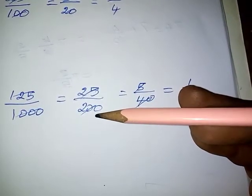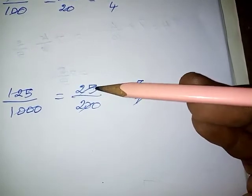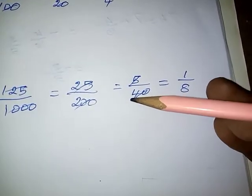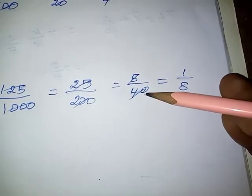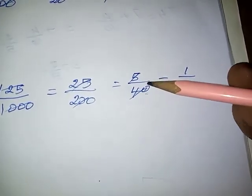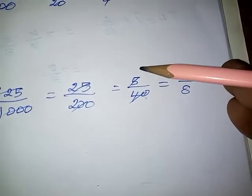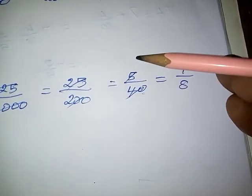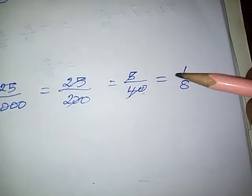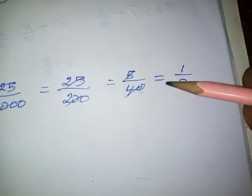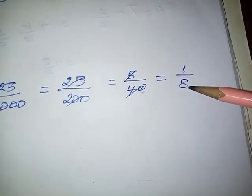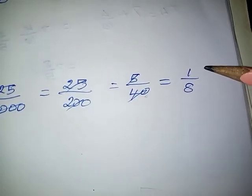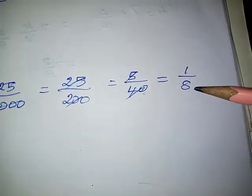Now, 25 and 200 can again be divided by the 5 times table: 5 fives are 25 and 40 fives are 200. Again, the numerator and denominator are multiples of 5, so we divide by 5 again: 1 five is 5 and 8 fives are 40. So the required fraction of the given decimal is 1 by 8.